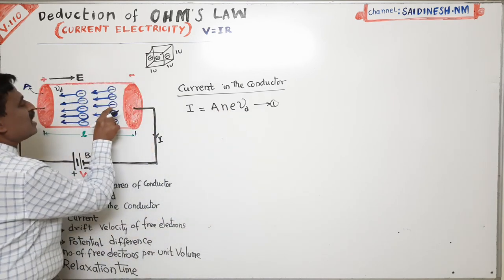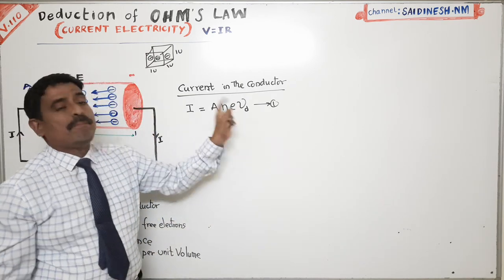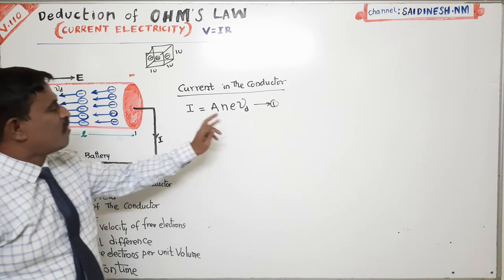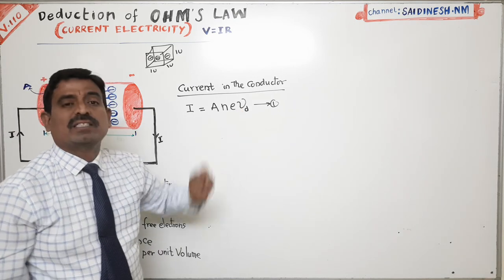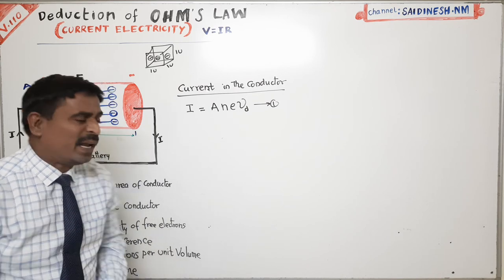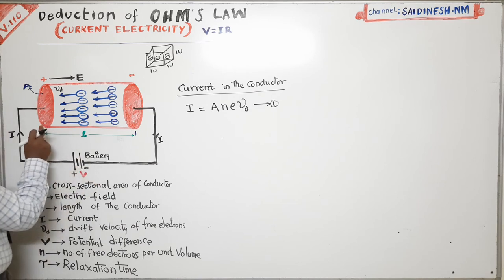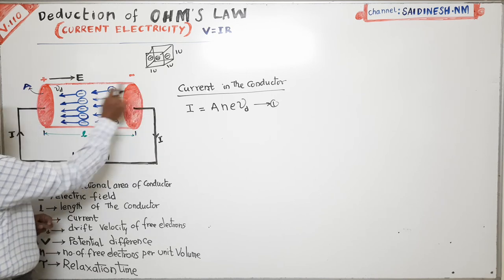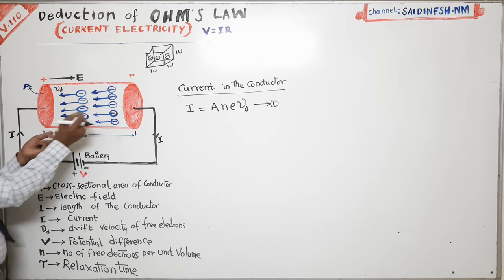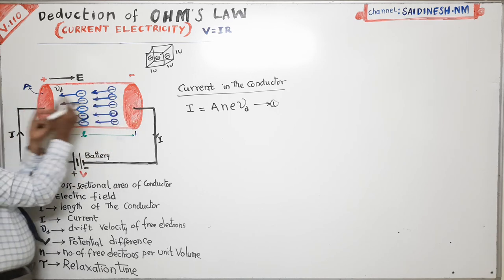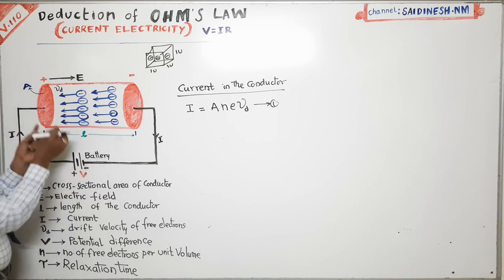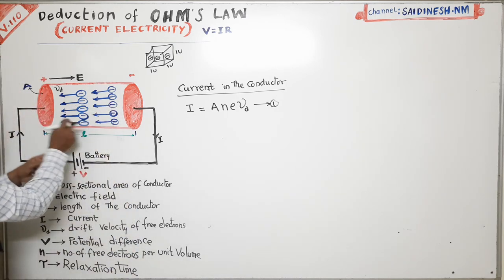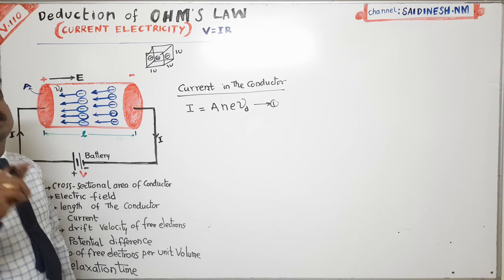Small e represents the charge of the electron, and Vd represents the drift velocity of the electrons. Now, first of all, we have to derive an expression for drift velocity. The force acting on electrons in the electric field capital E is given by the formula F equals EQ — force on a charged particle.